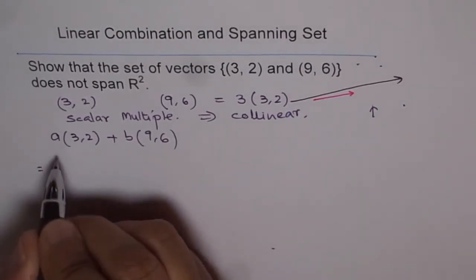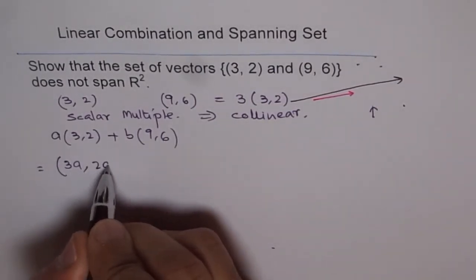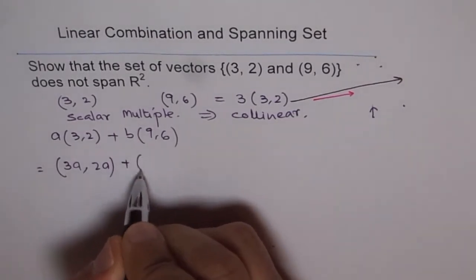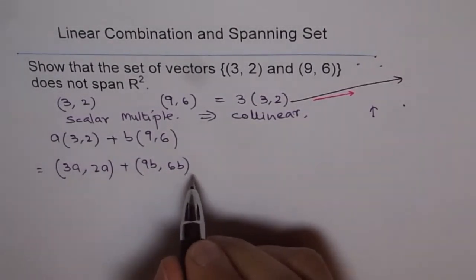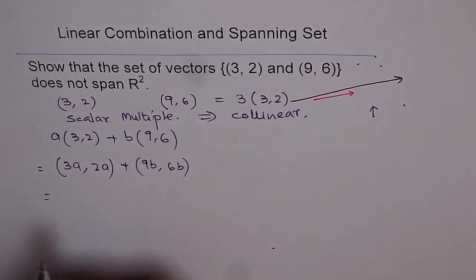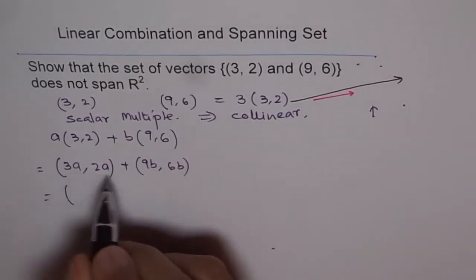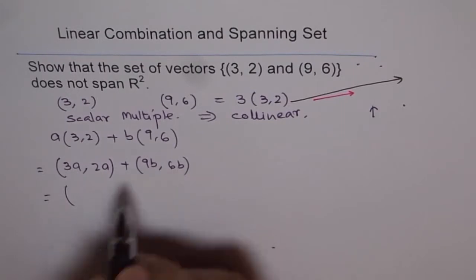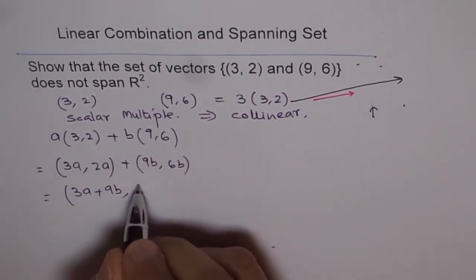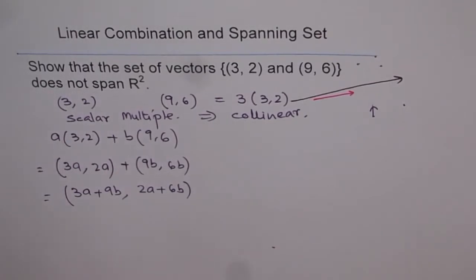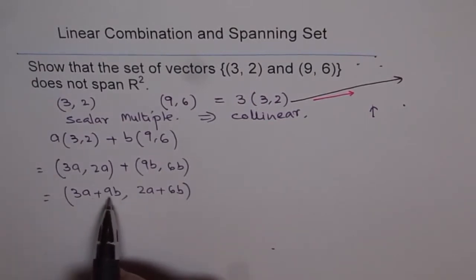That equals a times 3 = 3a, 2a — doing scalar multiplication — plus 9b and 6b. It is important to write the steps. You can apply the scalar multiplication property of vectors. Then using the addition property of vectors, when you add, you get 3a plus 9b for the first component and 2a plus 6b for the second component.